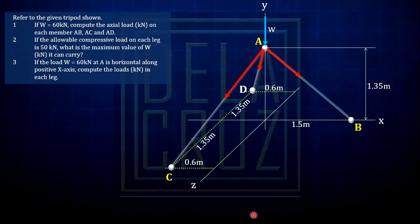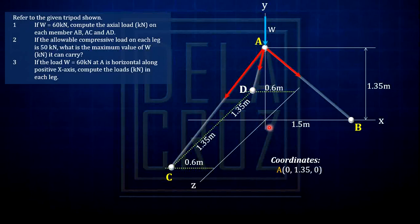So the first step is to locate the coordinates of each joint. After that we will compute the vectors of each member. So let's determine the coordinates of A: the x-coordinate of A is 0, the y-coordinate of A is 1.35, and the z-coordinate of A is 0. How about B? The x-coordinate of B is 1.5, and y and z are both 0 — so B is on the x-axis.